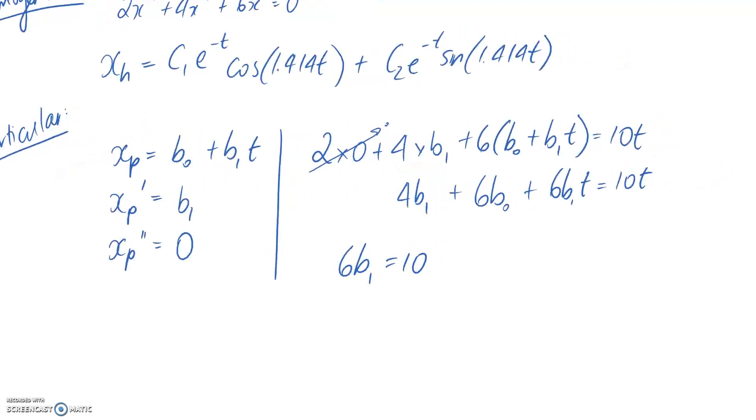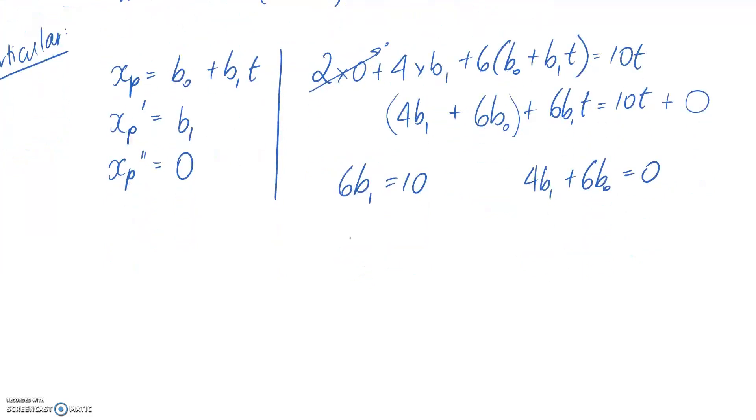And I'm going to have a second equation I can draw out where the constant part here has to equal the constant part on the right hand side, which is essentially zero. So that means that 4b1 plus 6b0 has to be equal to zero. So we now have two equations and two unknowns, so we should be able to solve. This one's easy. We're going to get b1 is 10 on 6, or we could write that a bit nicer as 5 on 3.